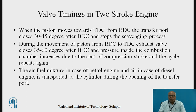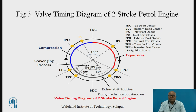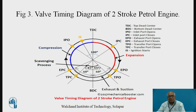Looking at the valve timing diagram of the two-stroke petrol engine: this is the top dead center position, and the cycle is completed in only two strokes. The expansion stroke starts here and ideally should complete at BDC, but the exhaust port opens earlier. Note that in two-stroke engines, instead of a valve it is called a port. After the exhaust port opens, the transfer port (TPO) opens and helps scavenging — driving out the exhaust gases — which continues until the transfer port closes.